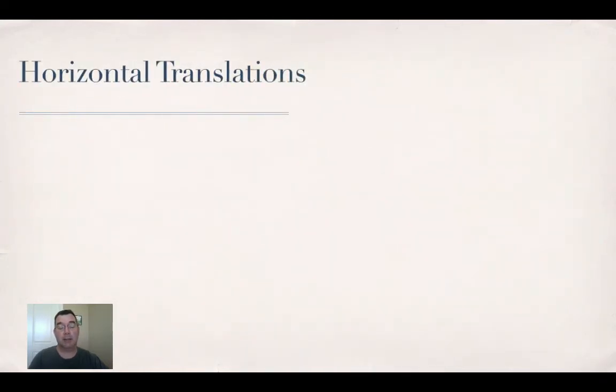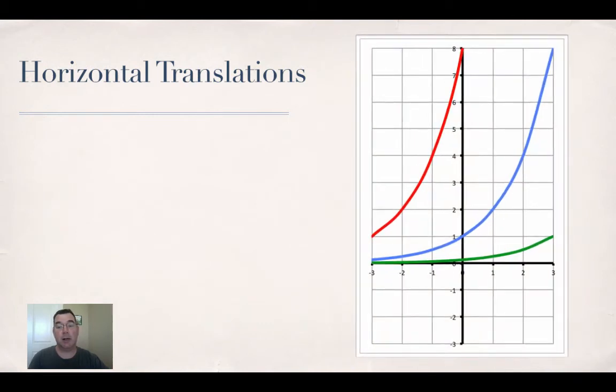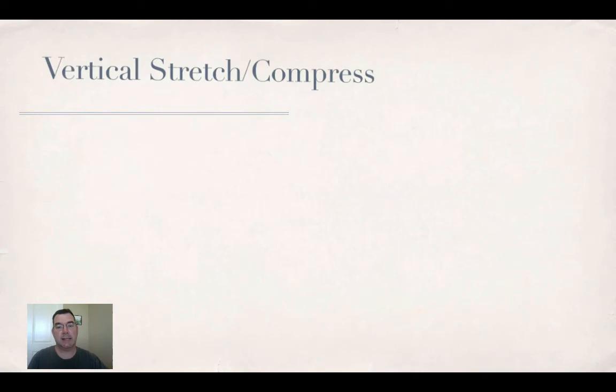And then we can translate horizontally as well. Now the red graph is the one that has been shifted three units to the left, and the green one is the graph that has been shifted three places to the right. So my blue one is still y equals 2 to the x. Now notice when I'm shifting left, the exponent becomes x plus 3, so it's the opposite of what you would think it would be. And then the green one is y equals 2 to the x minus 3. So those are horizontal translations.